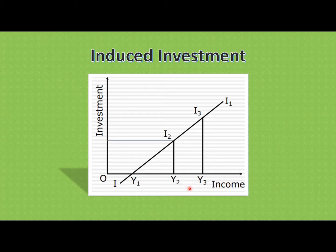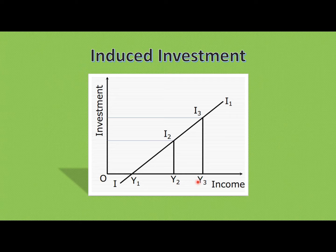Income is an exogenous variable and investment is an endogenous variable. When national income is Y2, the corresponding investment level is I1. Investment is a positive function of income — as income increases, investment increases. At income Y2, investment is I2, and at income Y3, investment is I3. So investment is a positive function of income.